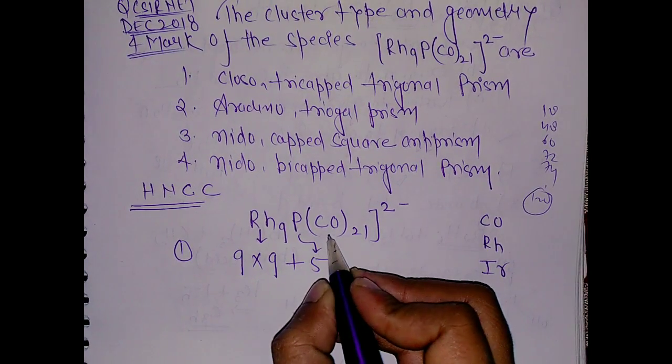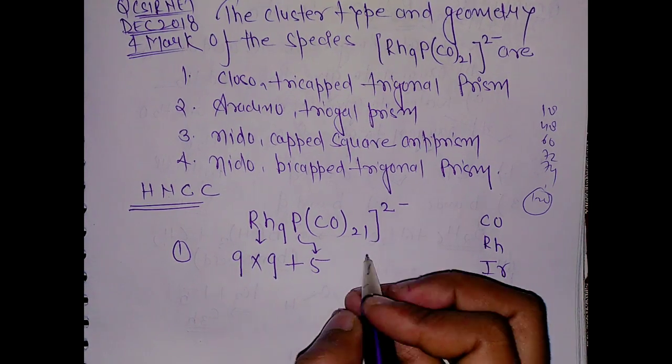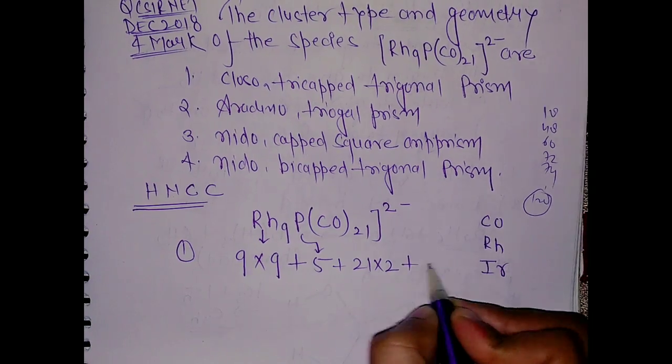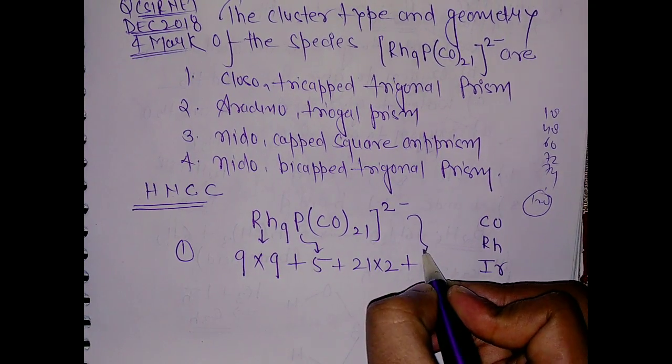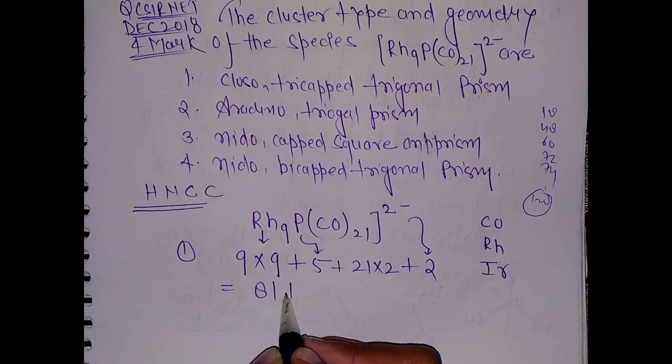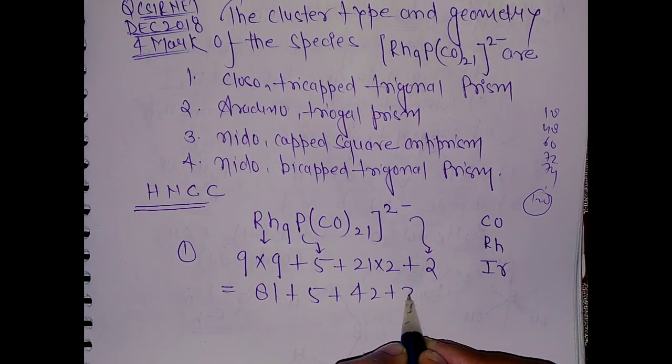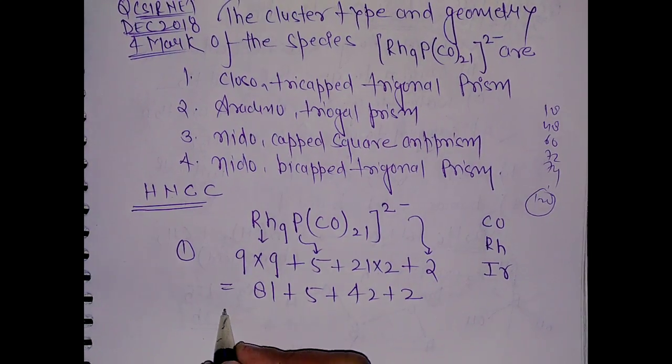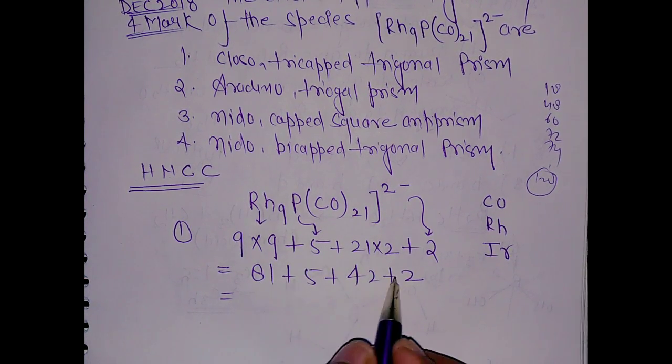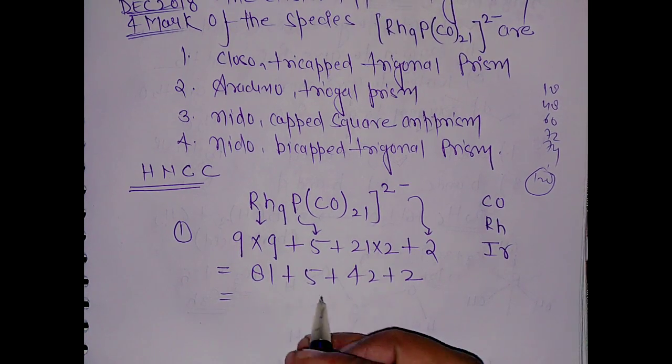Plus phosphorus has 5 valence electrons. Carbonyl is a 2 electron donor and there are 21, so 21 times 2, plus 2 for the negative charge. This is 81 plus 5 plus 42 plus 2. When you add this, you will get 130 total valence electrons.